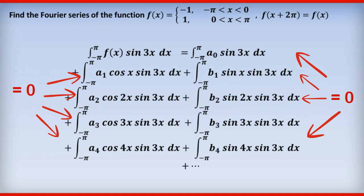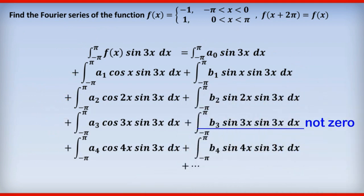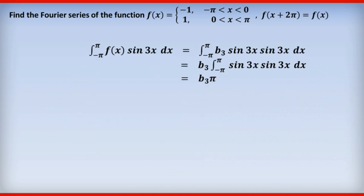What this means when we go back to trying to work out the value of b₃ is that all the terms on the right-hand side are equal to zero with the single exception of the expression with b₃ sin 3x sin 3x. And that right-hand side equals b₃ times π as we've just seen. And so that enables us to work out b₃.